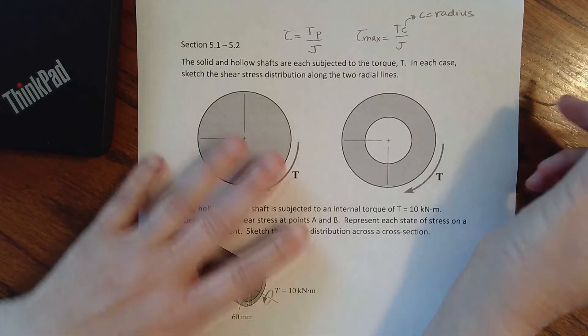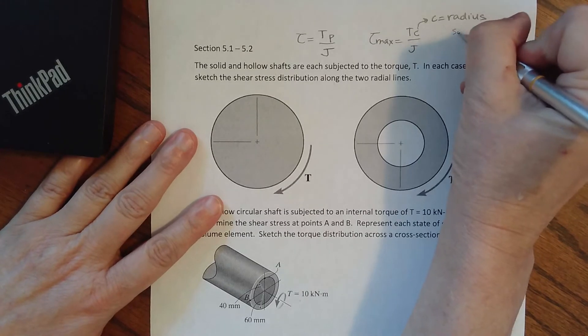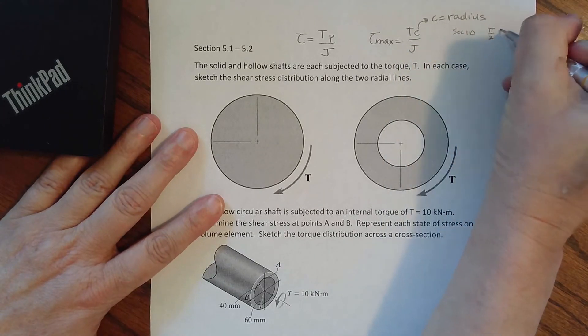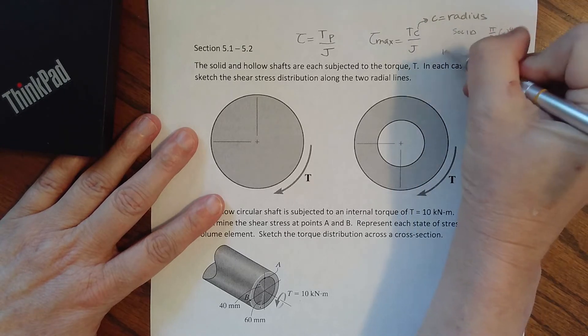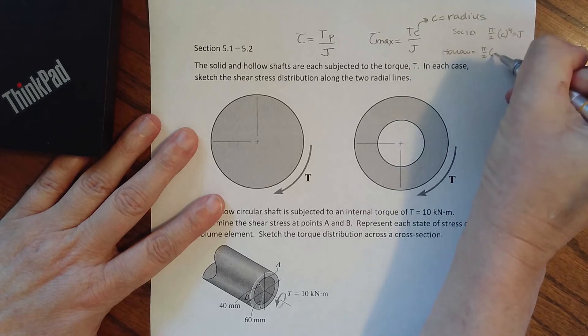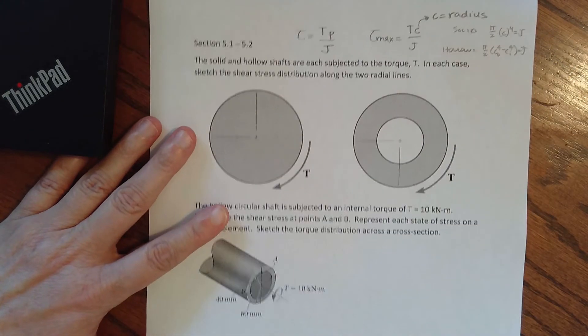And then what is our polar moment of inertia? If we are solid, then our polar moment of inertia is pi over 2, C to the 4th. If we were hollow, then it is pi over 2, C outer to the 4th minus C inner to the 4th, and that's J. So that's all we have so far.